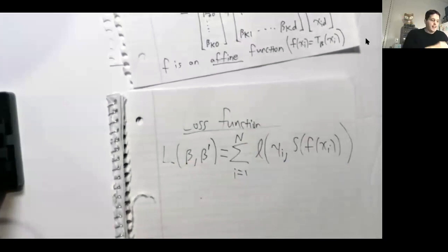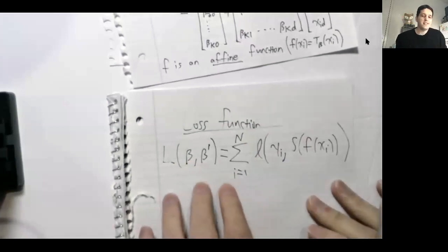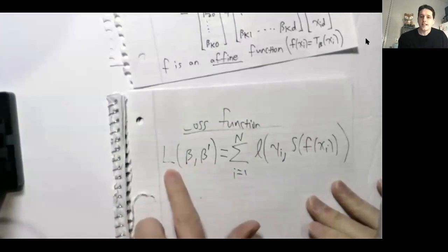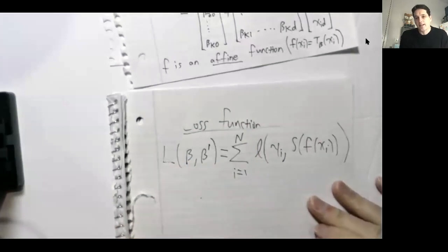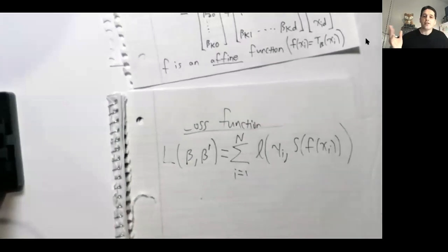How do we minimize this cost function? Just like before, we use gradient descent or stochastic gradient descent. In practice we use stochastic gradient descent. That's how we train a neural network.